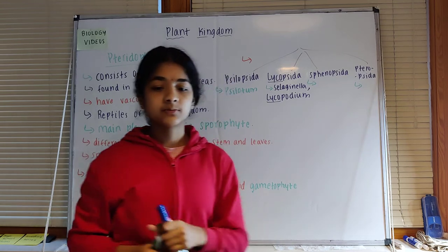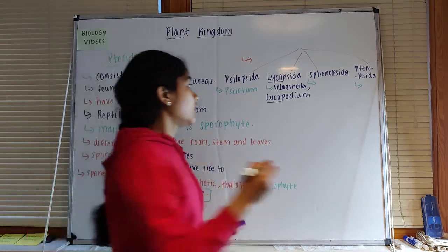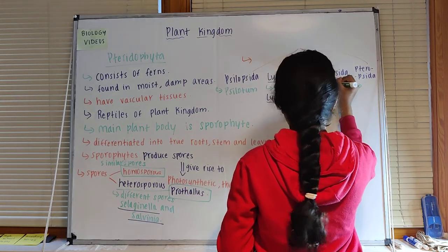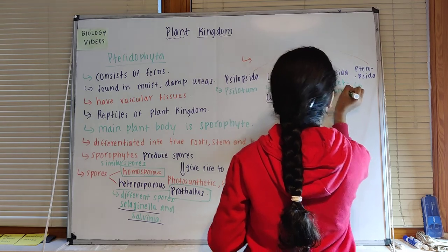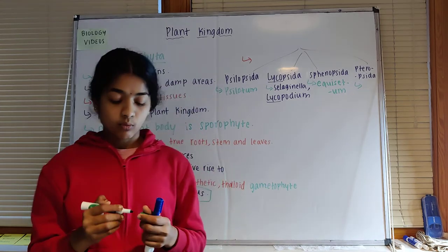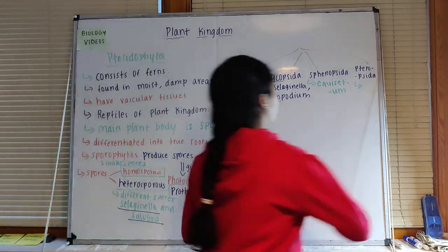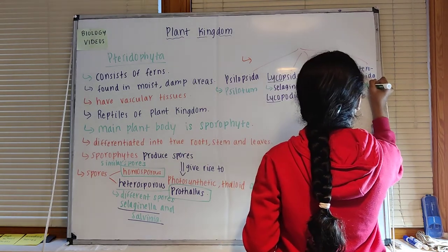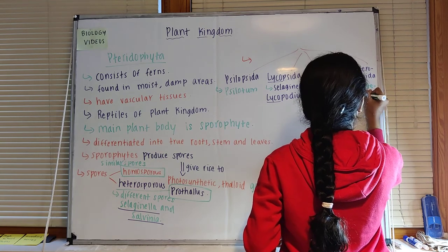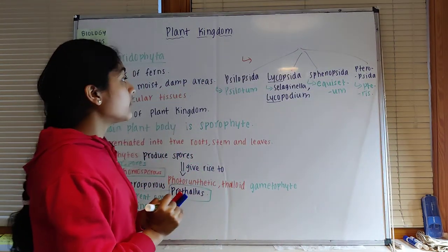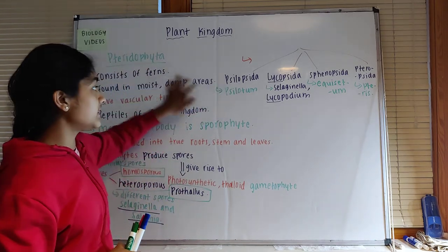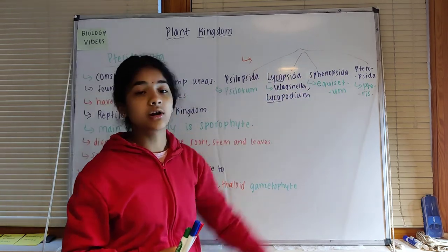Sphenopsida includes the pteridophyte Equisetum. Pteropsida includes one very important pteridophyte which is Pteris. So these are the four categories of pteridophytes: Psilopsida, Lycopsida, Sphenopsida, and Pteropsida.